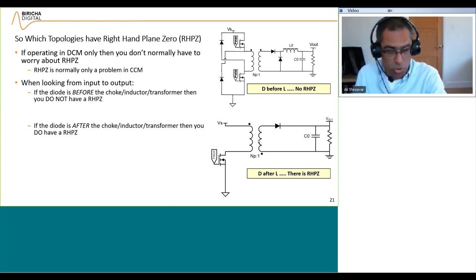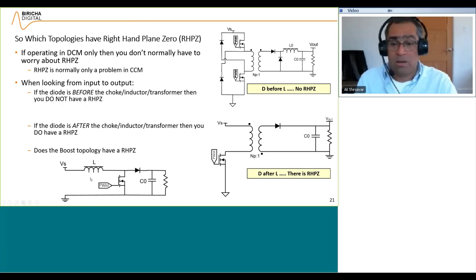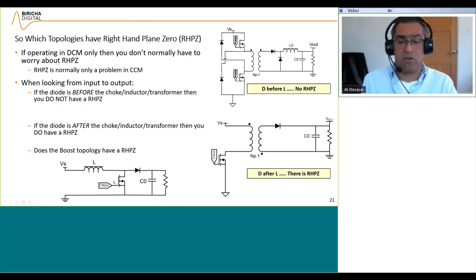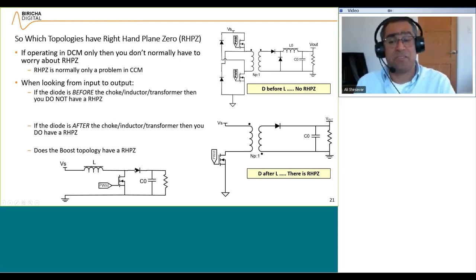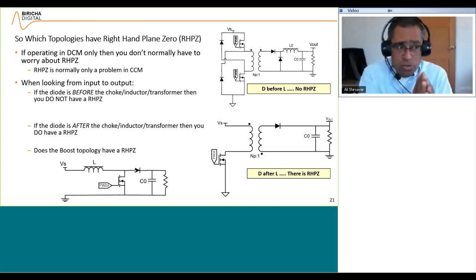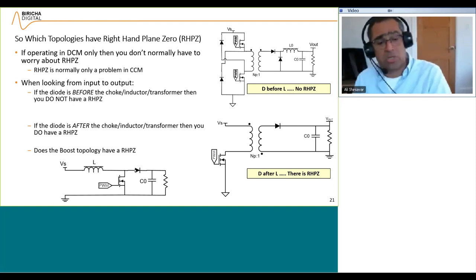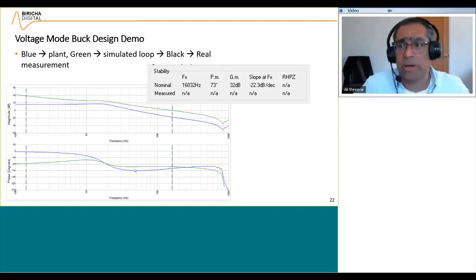Quick question: does a boost converter have a right-hand plane zero? Easy — this is the choke and that's a diode. The diode is after the choke, therefore the boost converter does have a right-hand plane zero. When you measure its plant, look for where the gain is going up but the phase is coming down, and then cross much lower to make sure everything works fine.